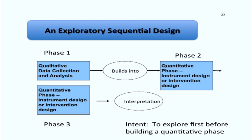Now I'm going to reverse those two phases of the explanatory sequential design. Rather than starting quantitatively, I'm going to start with qualitative data collection. This is a design I call a three-phase design: I collect qualitative data and analyze it, then build something quantitatively, and then test out that quantitative instrument, intervention, or typology in my third phase. We've moved from a convergent design — a single phase — to an explanatory design — two phases — to now an exploratory design, which is three phases, building into a more rigorous type of mixed methods project. The intent is to use this design when you first need to explore.